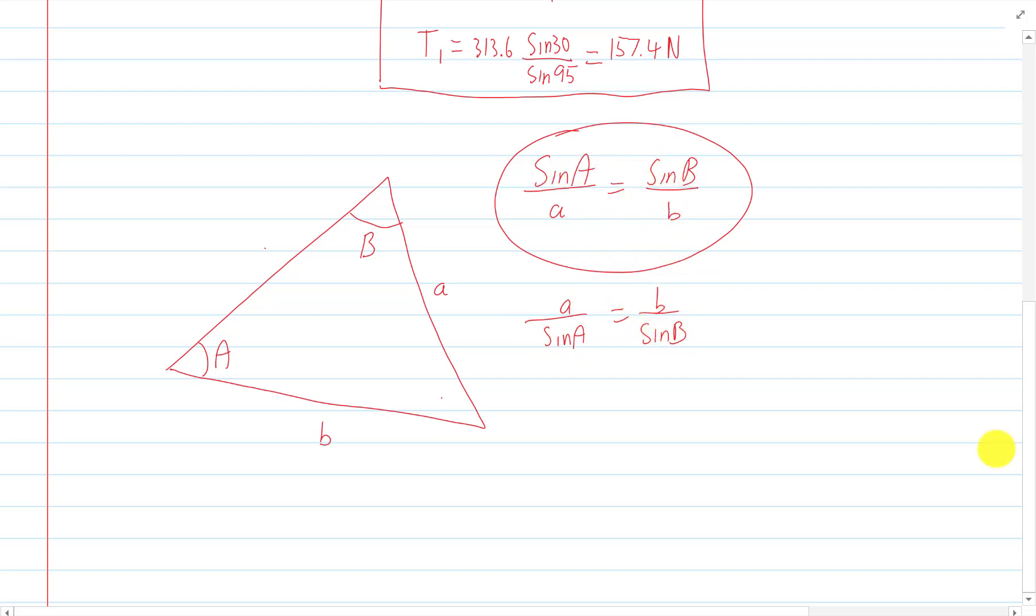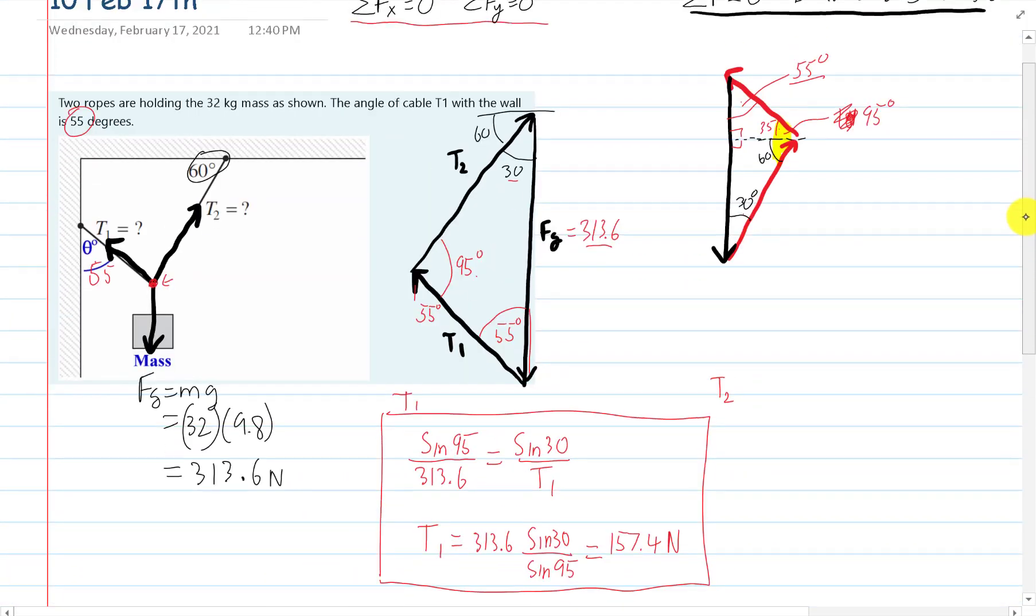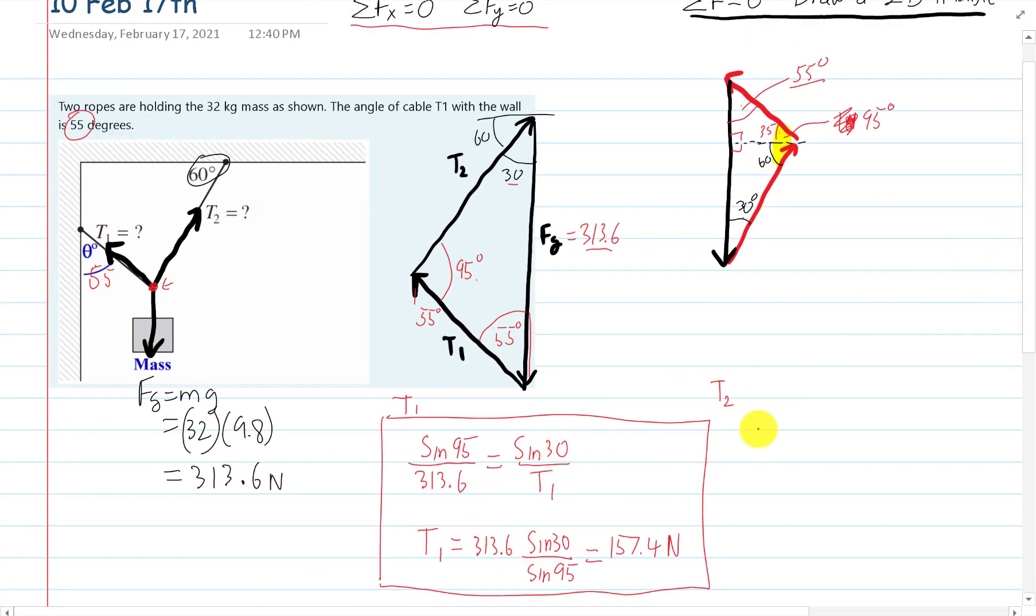That just makes it easier for us to do this. We don't have to then flip it around. We'll just say T2 divided by the sine of 55.